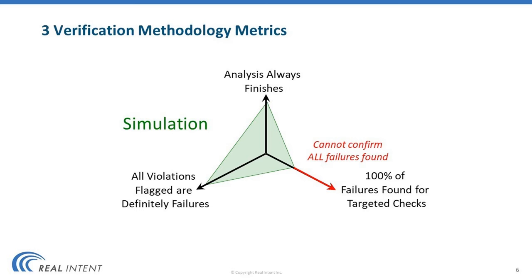We know that simulation finishes. When you create a test bench, you have some idea of how much time it will take to run, and simulation will finish. We also know that for simulation, the failures that are flagged are definite failures. But simulation is the weakest on the third metric, where it cannot confirm that 100% of failures have been detected. And whatever is the weakness of the methodology, that is where the engineering effort has to be spent to overcome that deficiency.